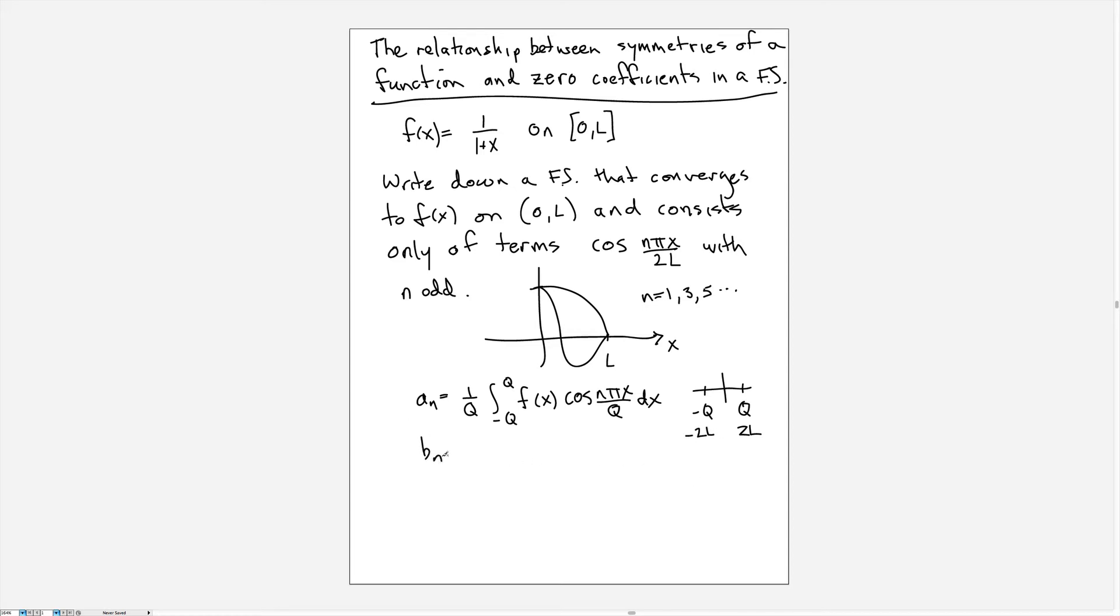And then the b_n terms will be 1 over q integral from minus q to q of f of x sin n pi x over q.